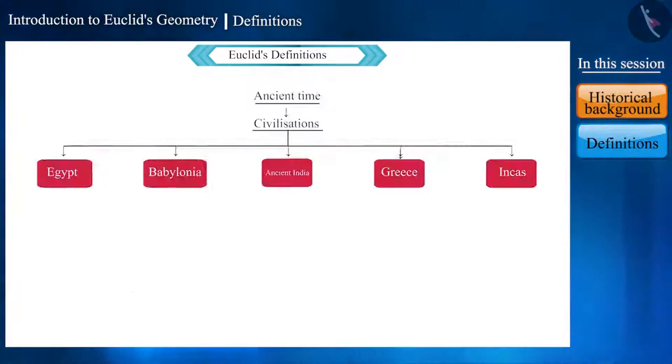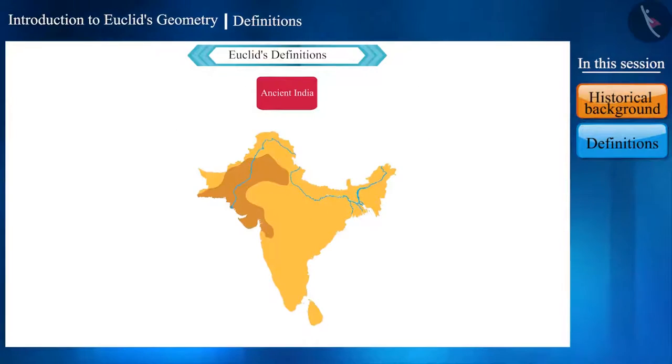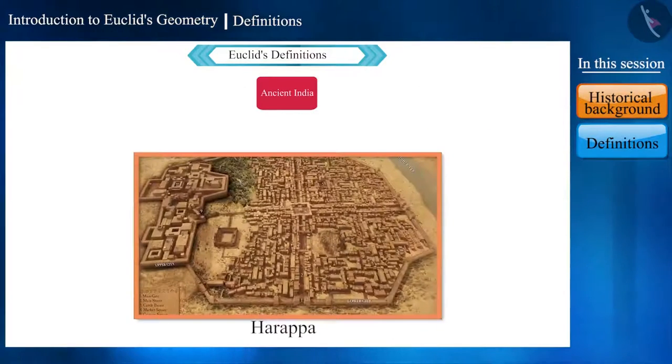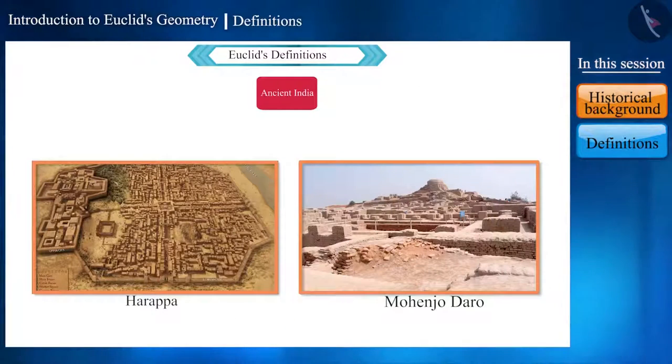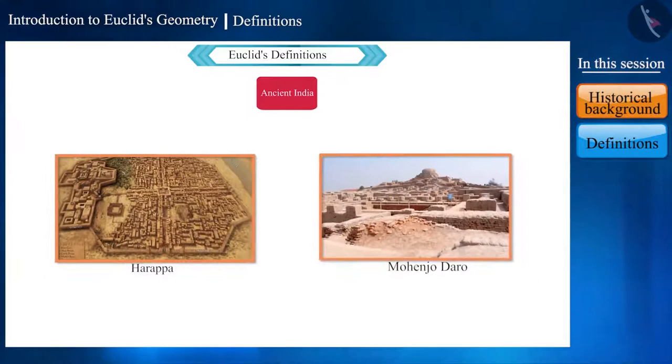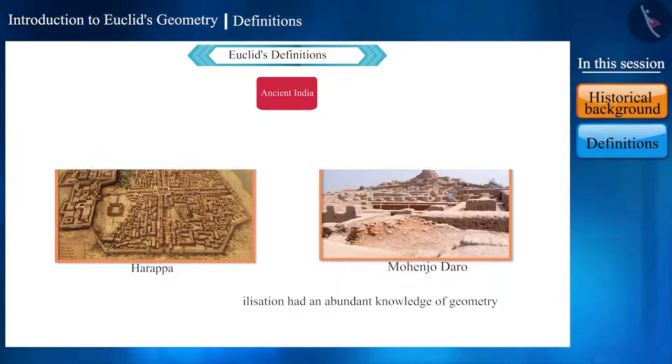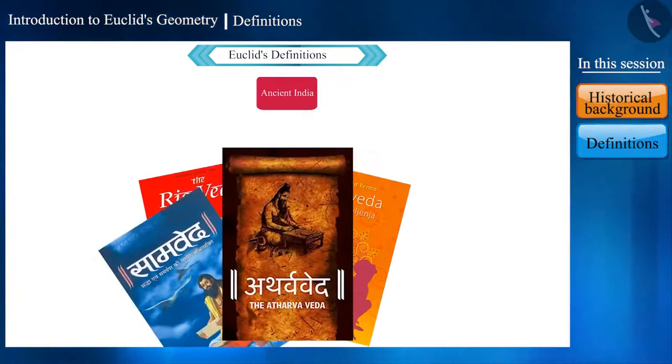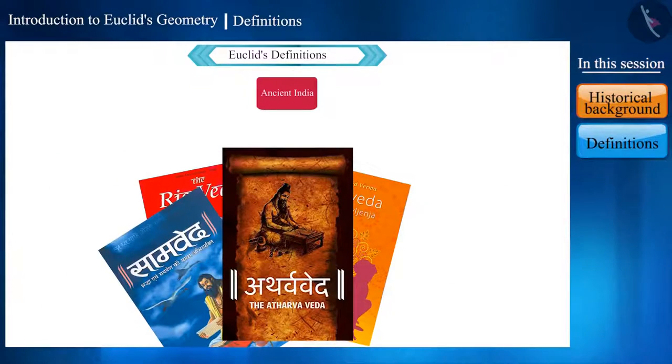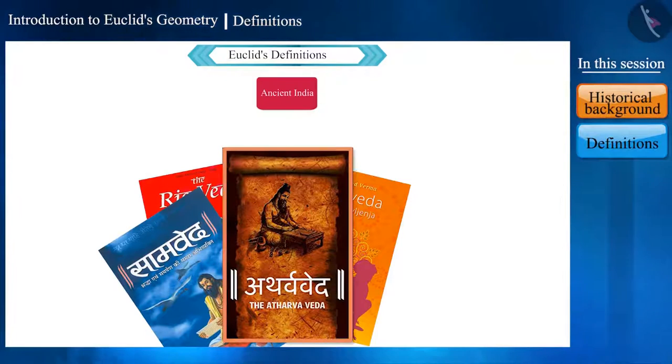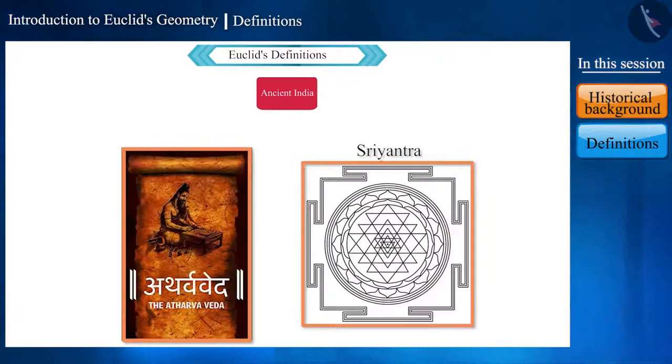And in the Indian subcontinent as well, by seeing the design and arrangement of cities such as Harappa and Mohenjodaro found during excavation, one can realize that the people of Indus Valley civilization also had an abundant knowledge of geometry. Not just by seeing, but also by reading the Vedas and scriptures, we have found evidence of knowledge of geometry.